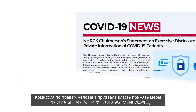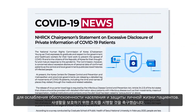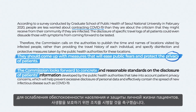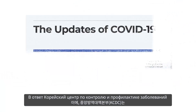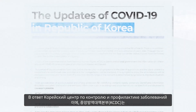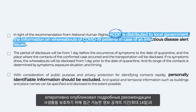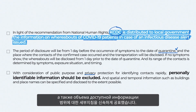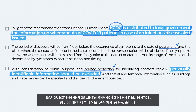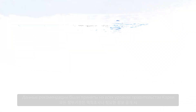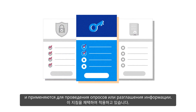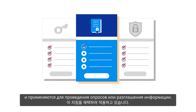The Commission called for the authorities to implement measures to ease the public's concerns and protect patients' privacy. In response, the Korea Centers for Disease Control and Prevention quickly published detailed guidelines with timeframes and the scope of publicly accessible information to protect patients' privacy. These guidelines were adopted by all levels of the government and applied to surveys or disclosures of any necessary information.